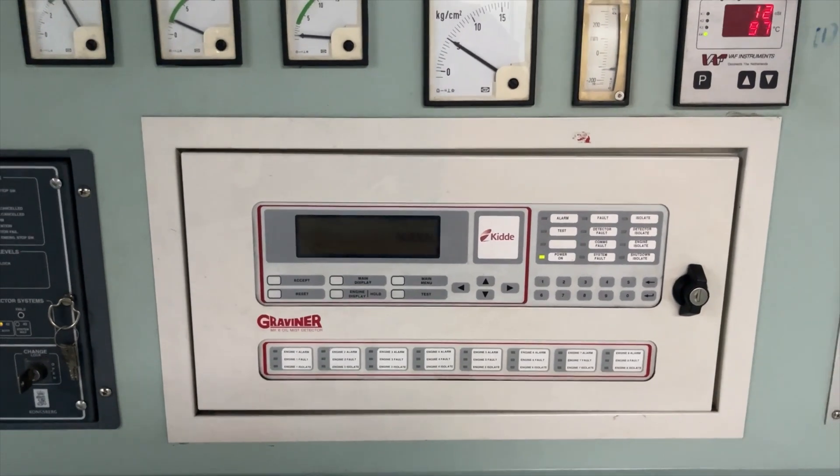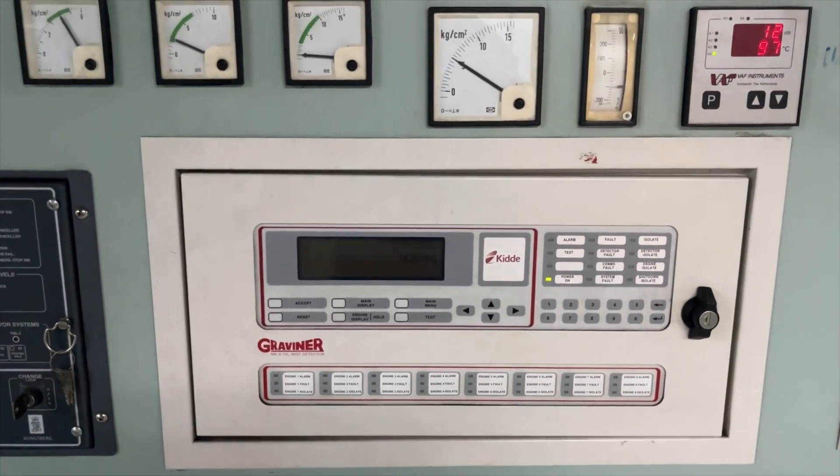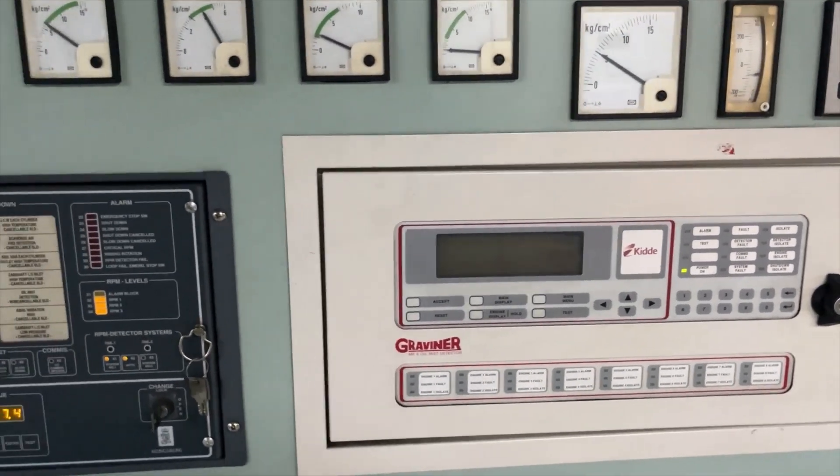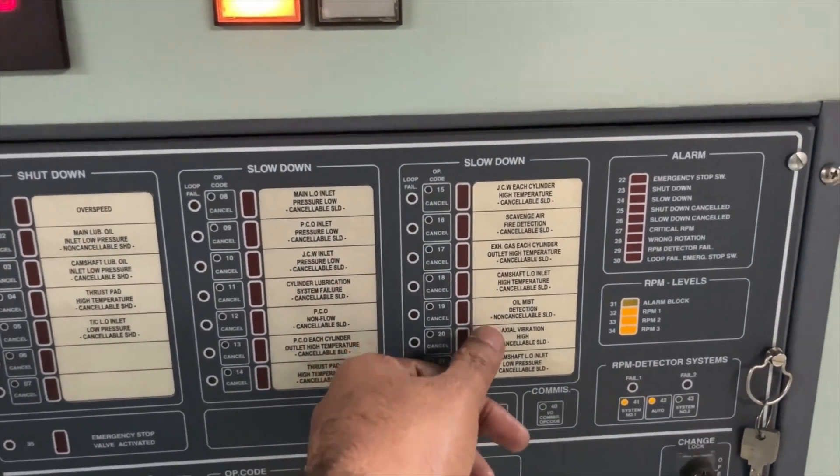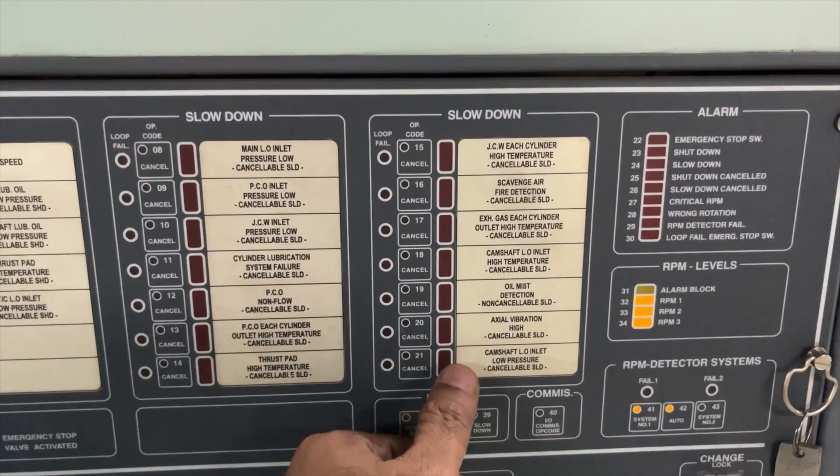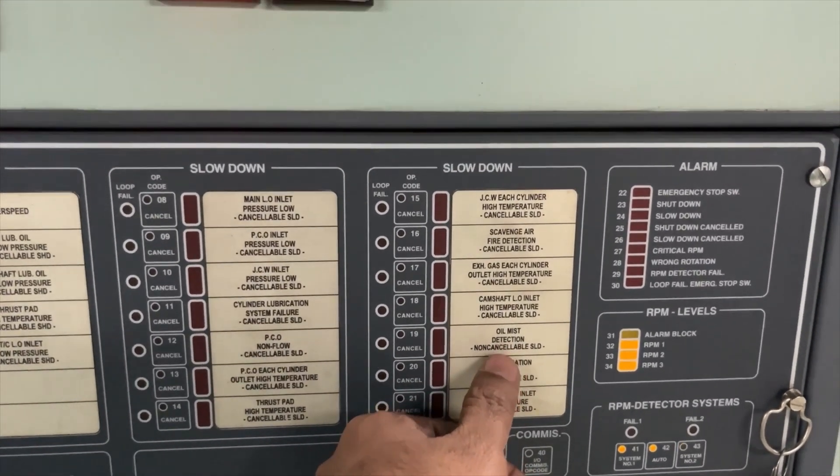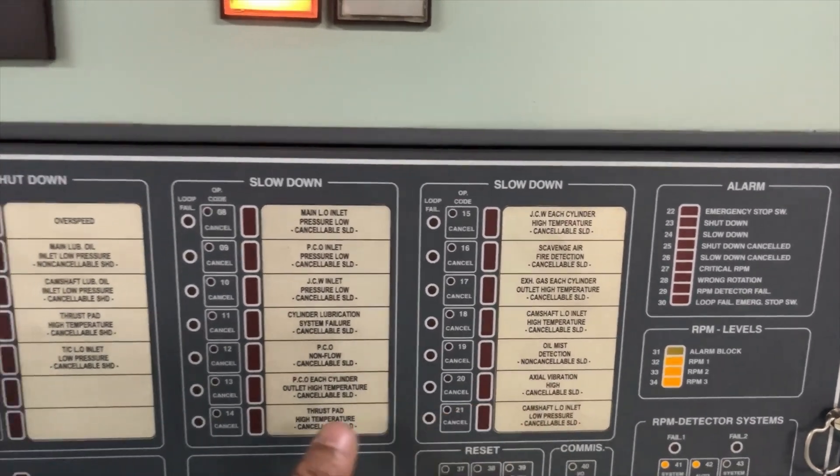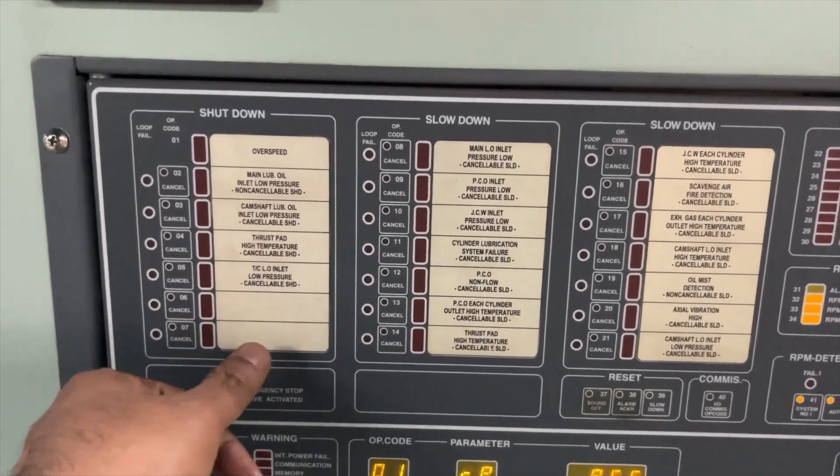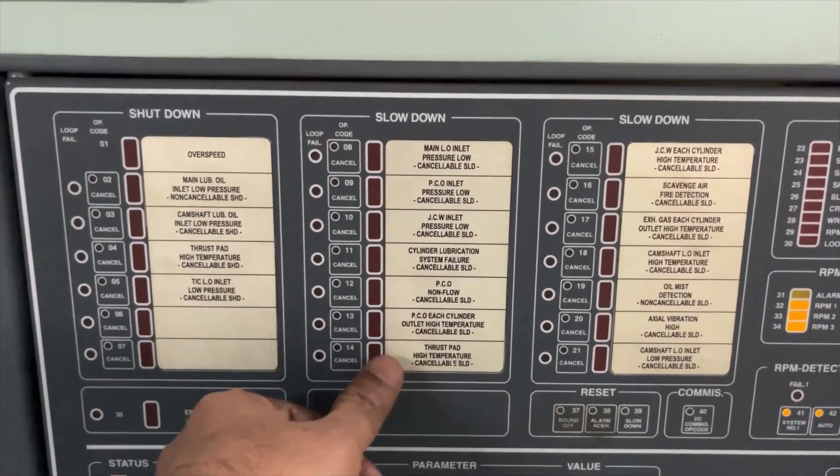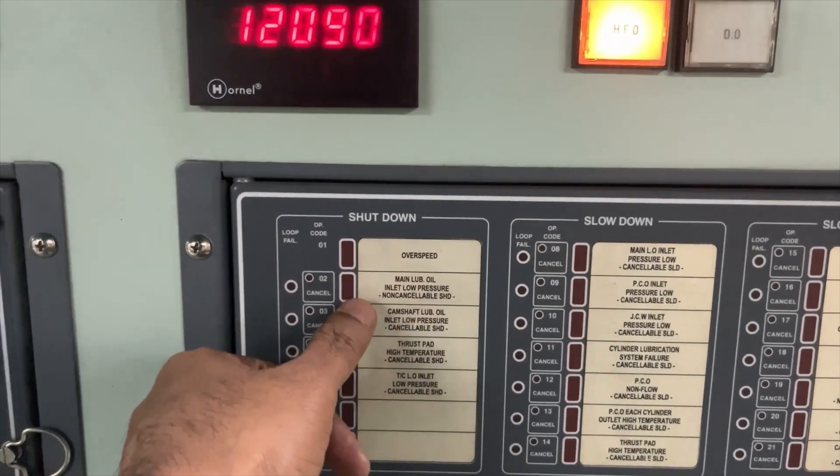This is for the protection of main engine. In case of crankcase fire, this unit is going to give the alarm and shut down. You can see here, this is a slow down, oil mist ejector and non-cancellable. You will find few of the items which shut down, which are cancelable. All these are cancelable. This one is non-cancellable. These are cancelable.